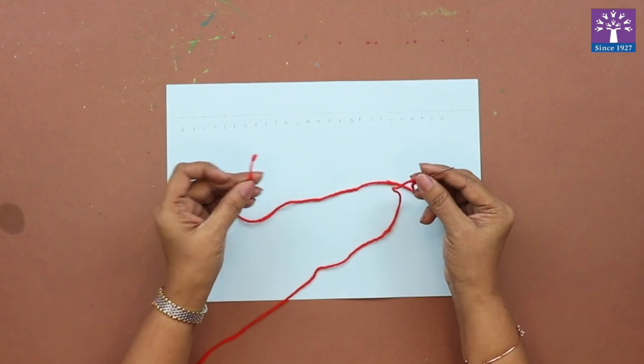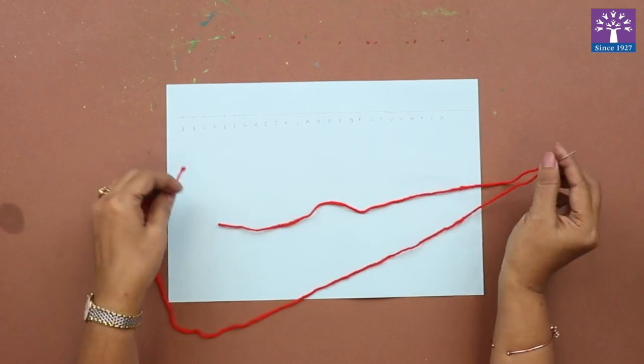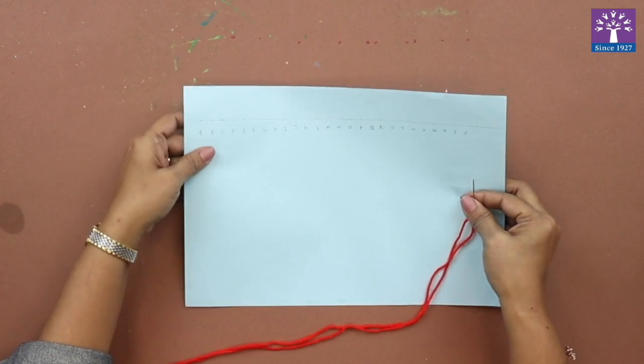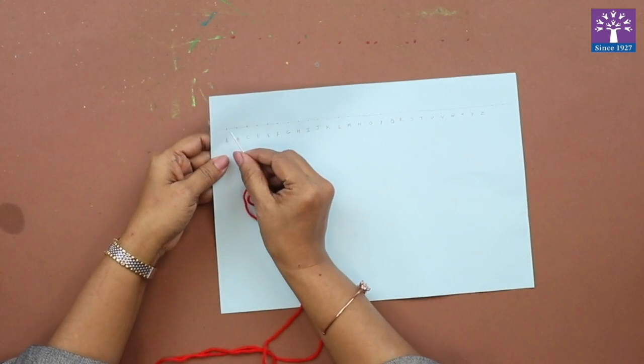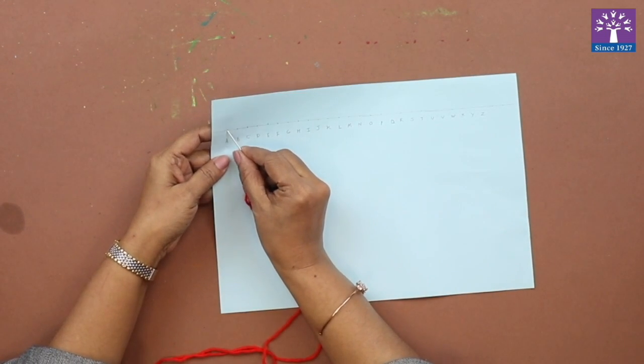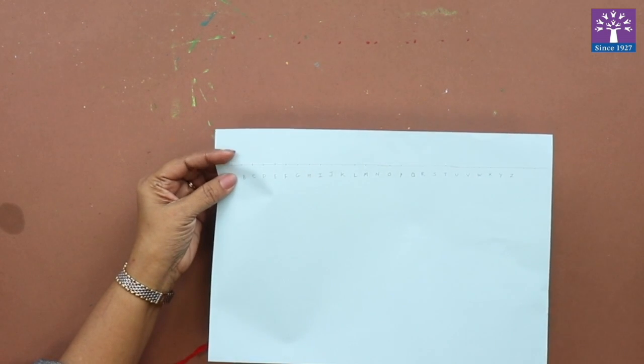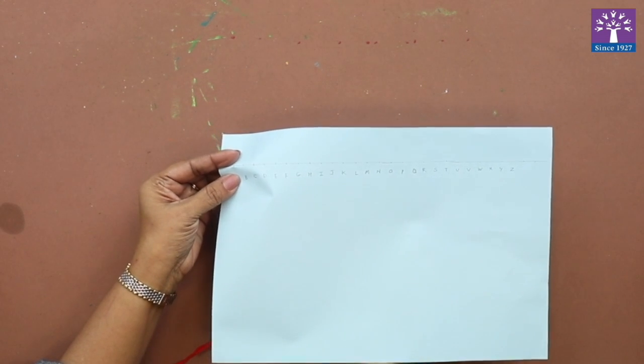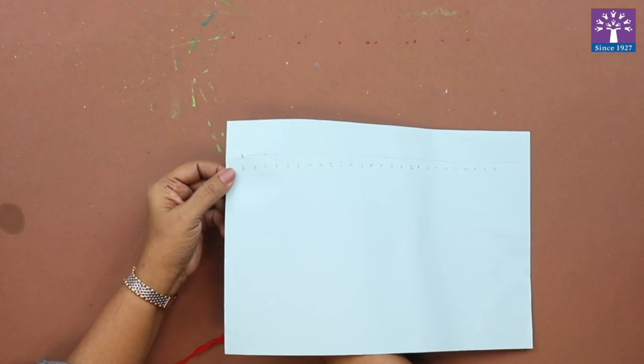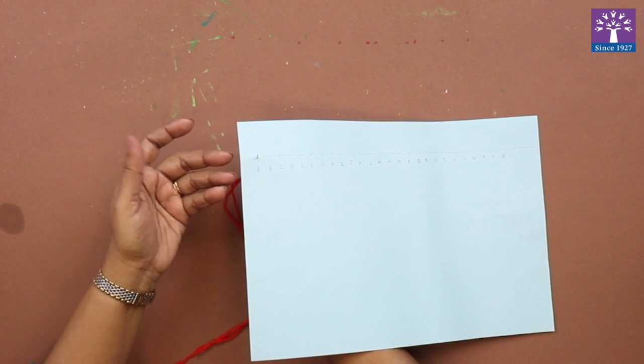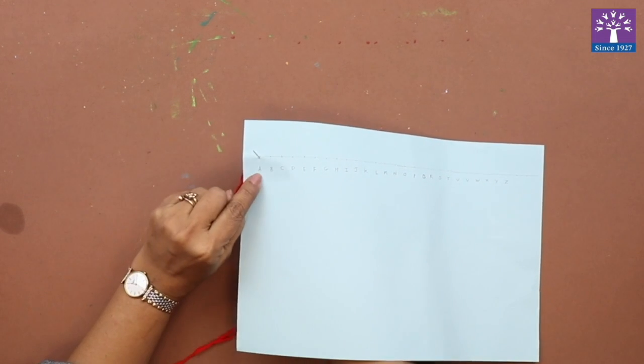So let's begin the running stitch. This is point A from behind. On the point, very gently you will poke your needle from the reverse side or from the behind on point A.